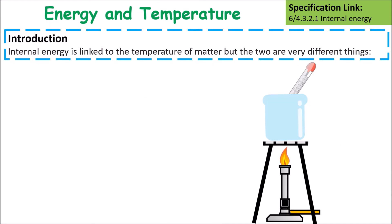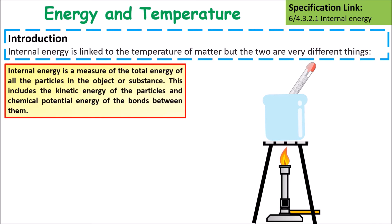Internal energy is linked to the temperature of matter, but they vary in different things. Internal energy is a measure of the total energy of all of the particles in an object or substance. This includes the kinetic energy of the particles and the chemical potential energy of the bonds between them.